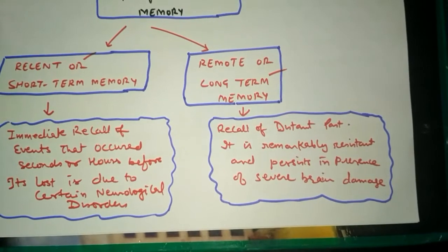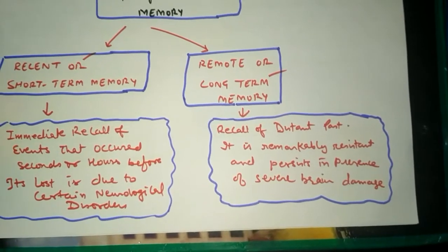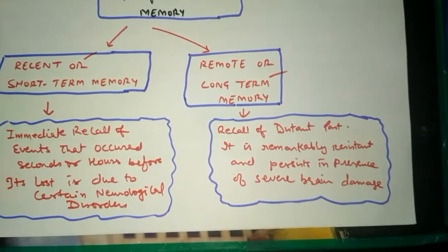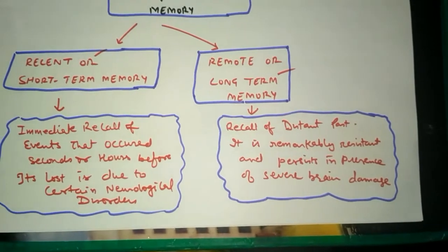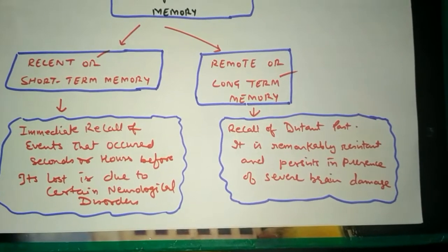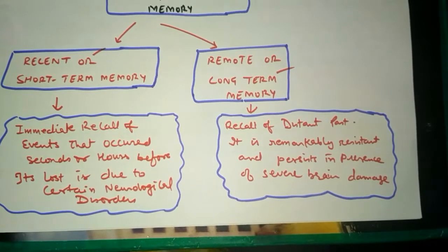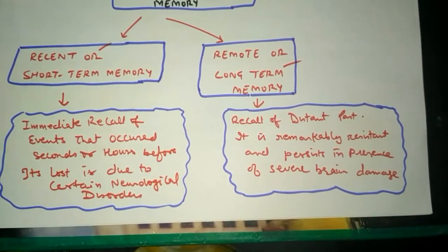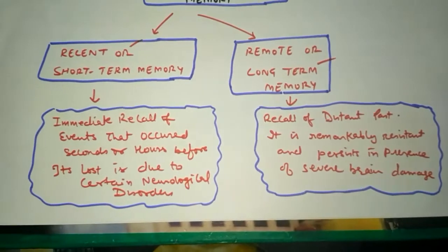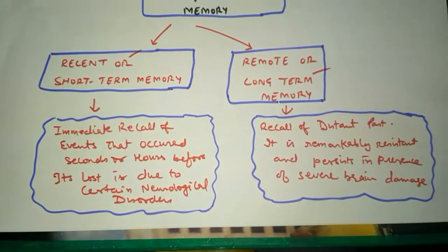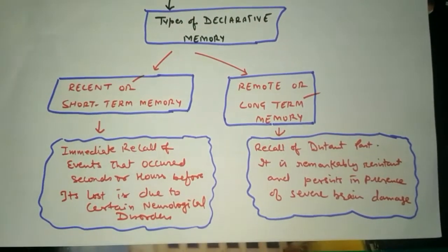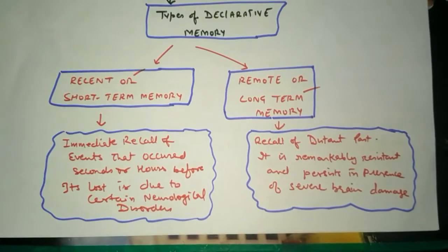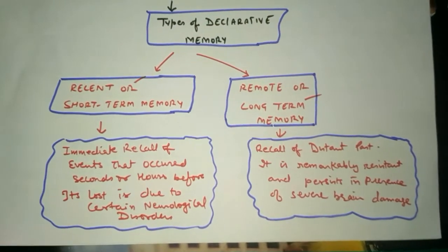If certain memories resist deletion in our brain, it may be due to severe brain damage. Some events or memories never delete from our brain, causing brain degeneration. So there are broadly two types of declarative memory: short-term memory and long-term memory.